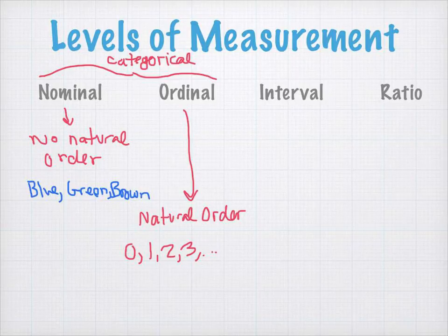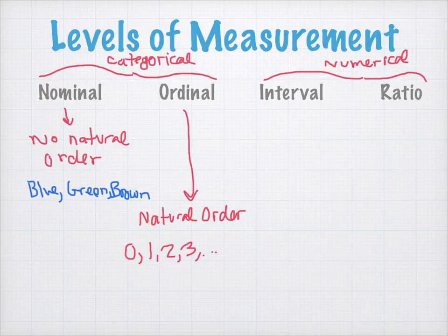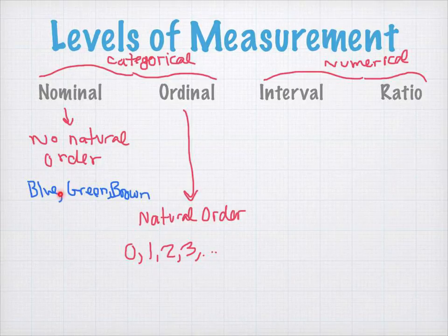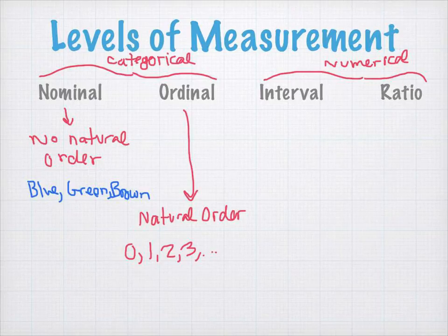Interval and ratio are more associated with numerical or quantitative data. The level of measurement matters because with nominal or ordinal data, we can't calculate statistics for that. We're not going to be able to find the mean of blue, green, or brown. You could add up and find the average jersey number, but that doesn't have any practical meaning. With interval and ratio, we will be able to compute things — we can find the mean and add and subtract values with practical significance.